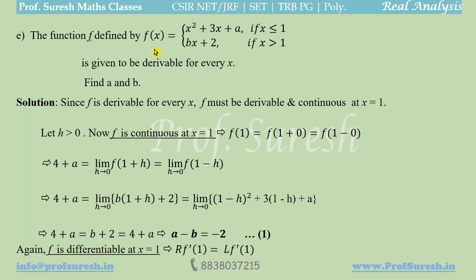Example 5: The function f is defined by f(x) = x² + 3x + a if x ≤ 1, and bx + 2 if x > 1. The function is given to be derivable (differentiable) for every x. Find the values of a and b.